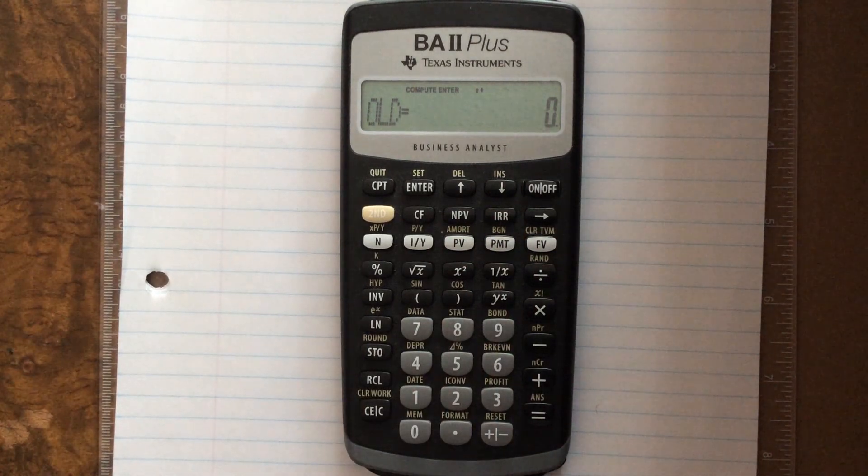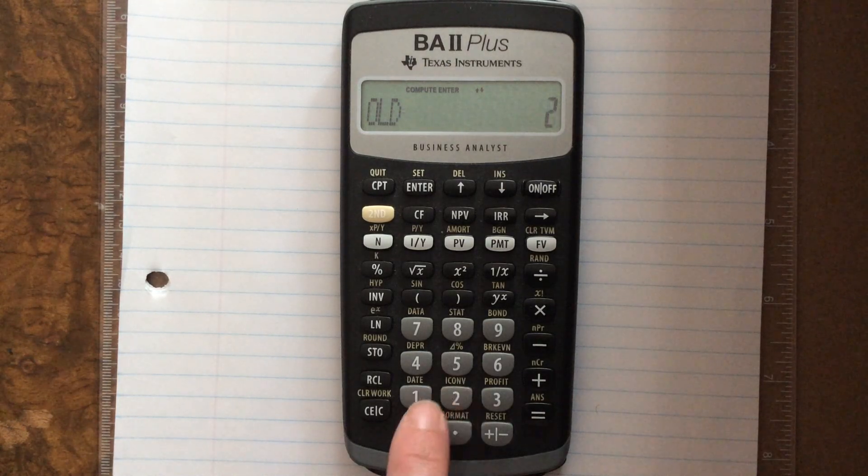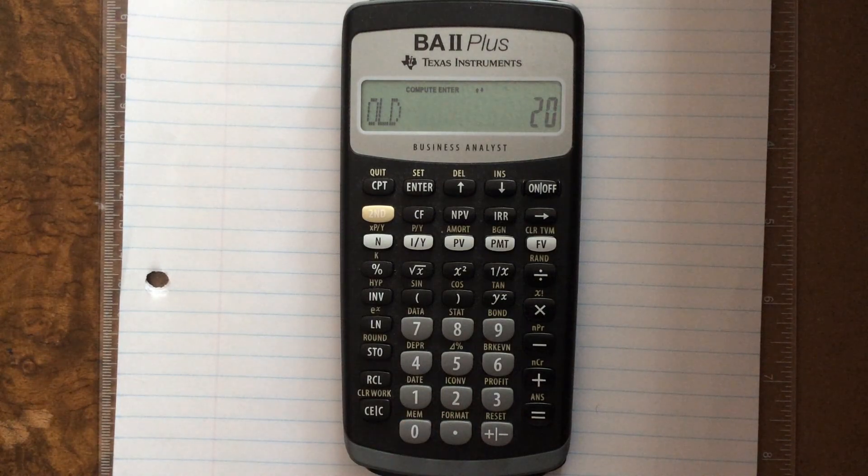I'm going to work with one of the first examples in the notes, a $20 an hour pay that gets increased by 10%. In order to put those values in, you want $20 as your old hourly rate.